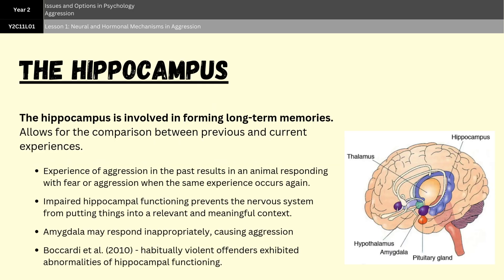Moving on, we have the hippocampus, which is involved with the formation of long-term memories. The hippocampus allows animals to compare the conditions of a current experience with similar past experiences. For example, if an animal had previously been attacked by another animal, the next time they encounter that same animal, they're likely to respond either with aggression or fear. Therefore, impaired functioning in the hippocampus prevents the nervous system from putting things into relevant and meaningful context, which may then cause the amygdala to respond inappropriately to sensory experiences, ultimately resulting in aggressive behavior. This was investigated by Boccardi et al. in 2010, who found that habitually violent offenders exhibited abnormalities of hippocampal functioning.